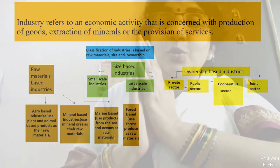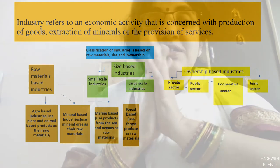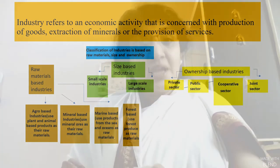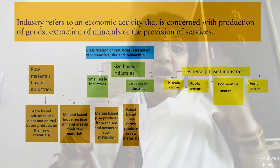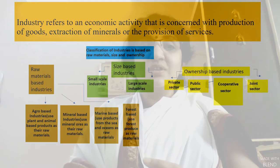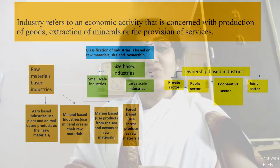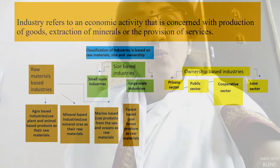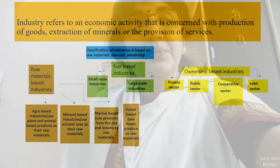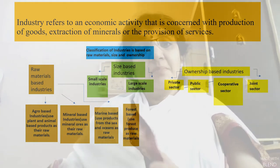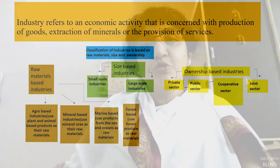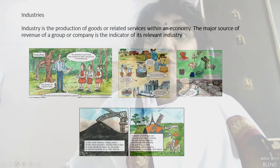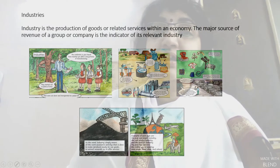Now, this was about the raw materials classification. The second major classification of industries is done based on size. Industries are broadly classified into large scale and small scale industries. Cottage or household industries fall under small scale industries, where the capital invested and volume of production is lesser compared to a large scale industry. Examples of small scale industries include basket weaving, pottery making, food processing, and silk weaving. Production of automobiles and heavy machinery fall under large scale industries.